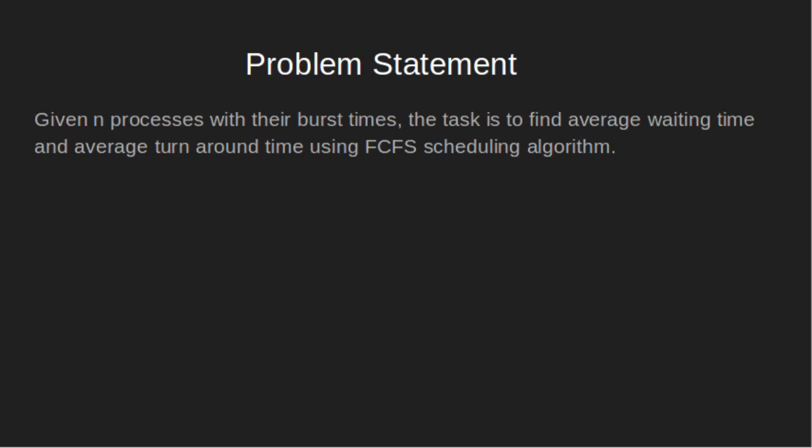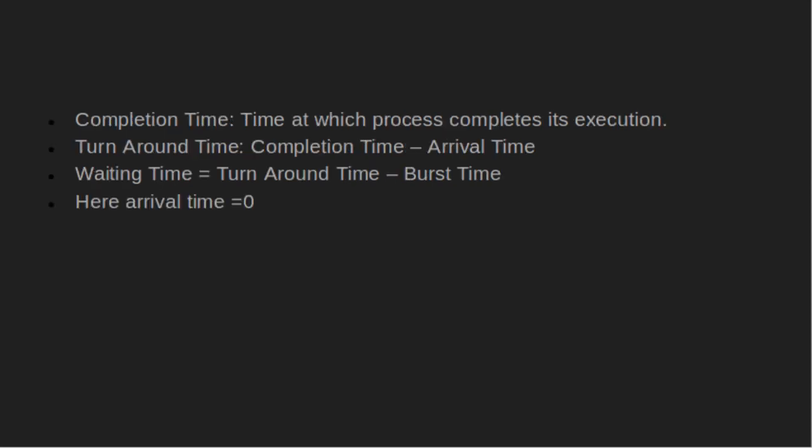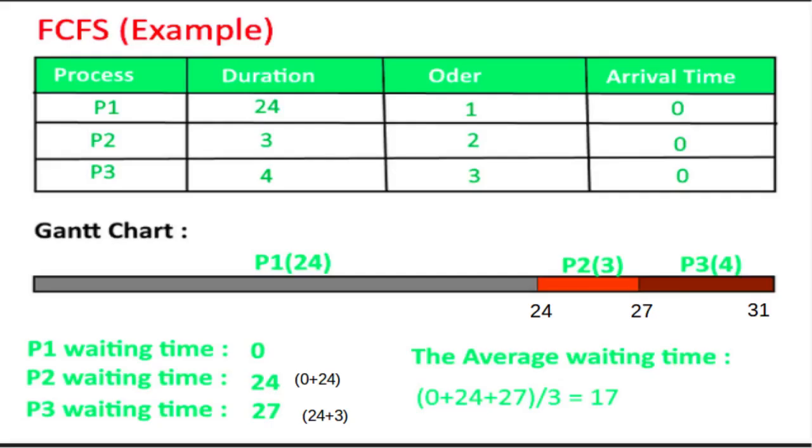Problem Statement: Given n processes with their burst times, the task is to find average waiting time and average turnaround time using First Come, First Serve Scheduling Algorithm. Completion time is the time at which a process completes its execution. Turnaround time is completion time minus arrival time. Waiting time equals turnaround time minus burst time. Since we have assumed arrival time as 0, turnaround time and completion times are the same.